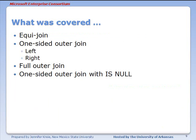So what we've covered in this presentation is the equi-join, one-sided outer join discussing whether to use left or right. We've looked at a full outer join and we've looked at a one-sided outer join using the is null criterion.